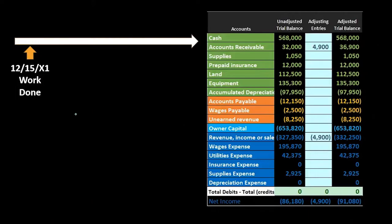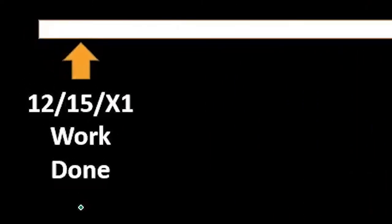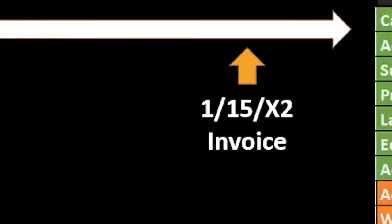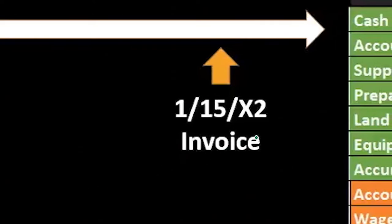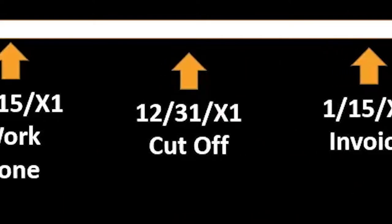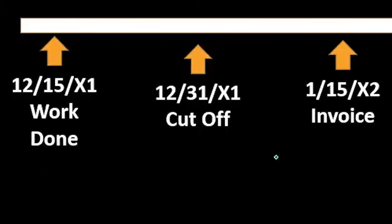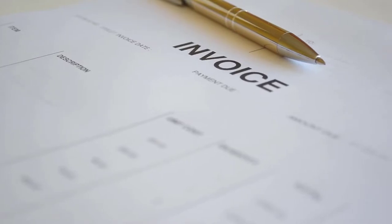We have an example here where work was done — the business did work on 12/15 of X1. We didn't invoice the work until 1/15 of X2, in the next year. So note that we have crossed over the cutoff date — the date of the financial statements — between the time the work was done and the invoice was generated.